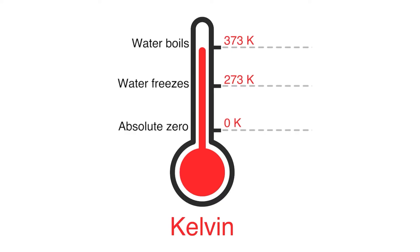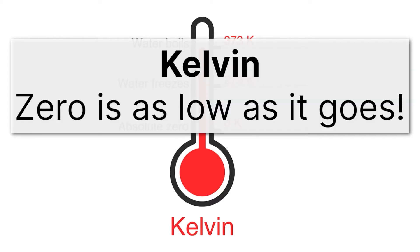One last temperature scale to be familiar with. In the Kelvin scale, water boils at 373 Kelvin and freezes at 273 Kelvin. Those are not very convenient. Let's be honest. Those are hard to remember. They're actually kind of inconvenient. What's convenient about this Kelvin scale is that absolute zero is just straight up zero. So for Kelvin, zero is as low as it goes. And that's what makes the Kelvin scale a nice scale.